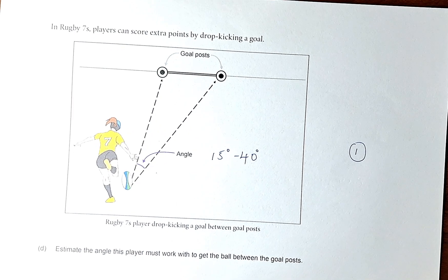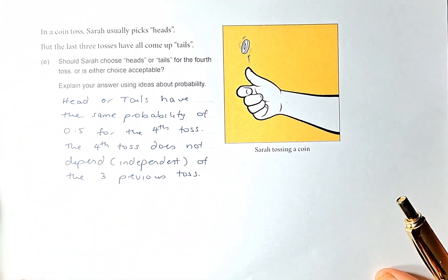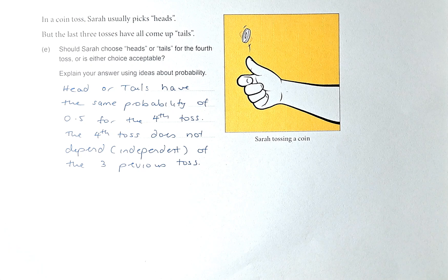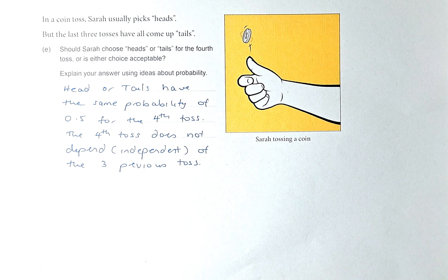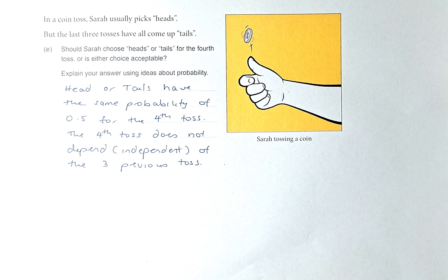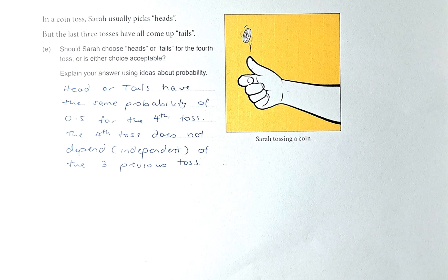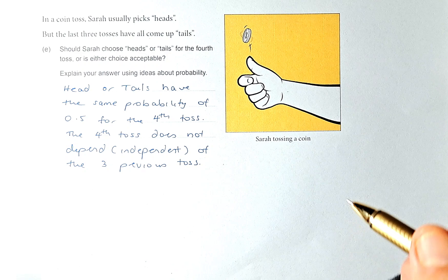Now we shall do question 5E, which is outcome number 3. This question is about probability. In a coin toss, Sarah usually picks heads. But the last 3 tosses have all come up tails. Should Sarah choose head or tail in the 4th toss, or is either choice acceptable? The answer is either choice is acceptable because the chances of getting a head or tail are the same. The probability of a head or tail on the 4th toss is still 0.5. The 4th toss is an independent event — not dependent on the previous 3 tosses.